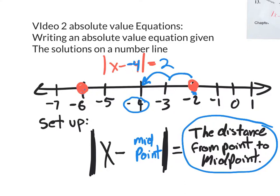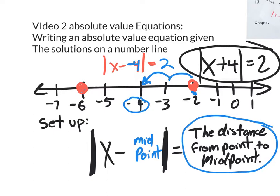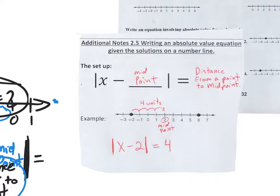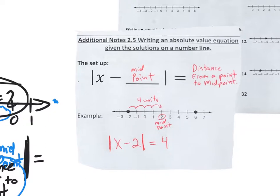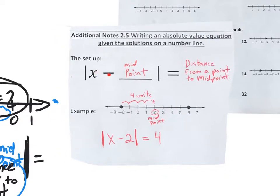To make it nicer: the absolute value of x plus four equals two. That's the equation that gives those answers. Now for the practice problem with negative two and six — x minus the midpoint inside absolute values equals the distance from the point to the midpoint. Going one in from each side, the midpoint is two. The distance from either point to the midpoint is four units. So the equation is the absolute value of x minus two equals four.